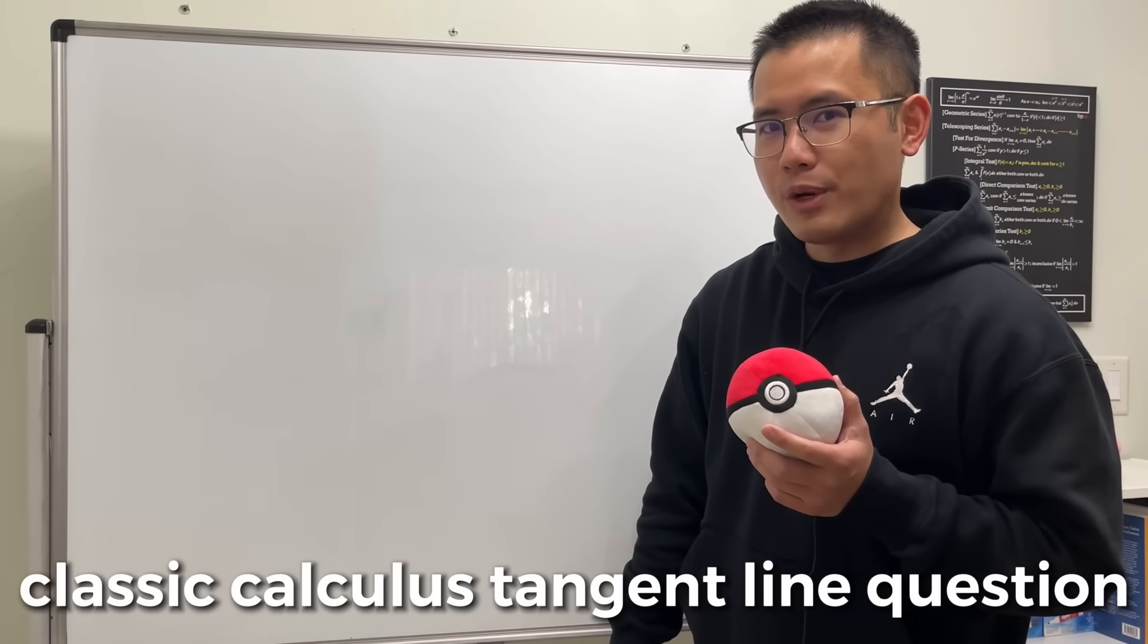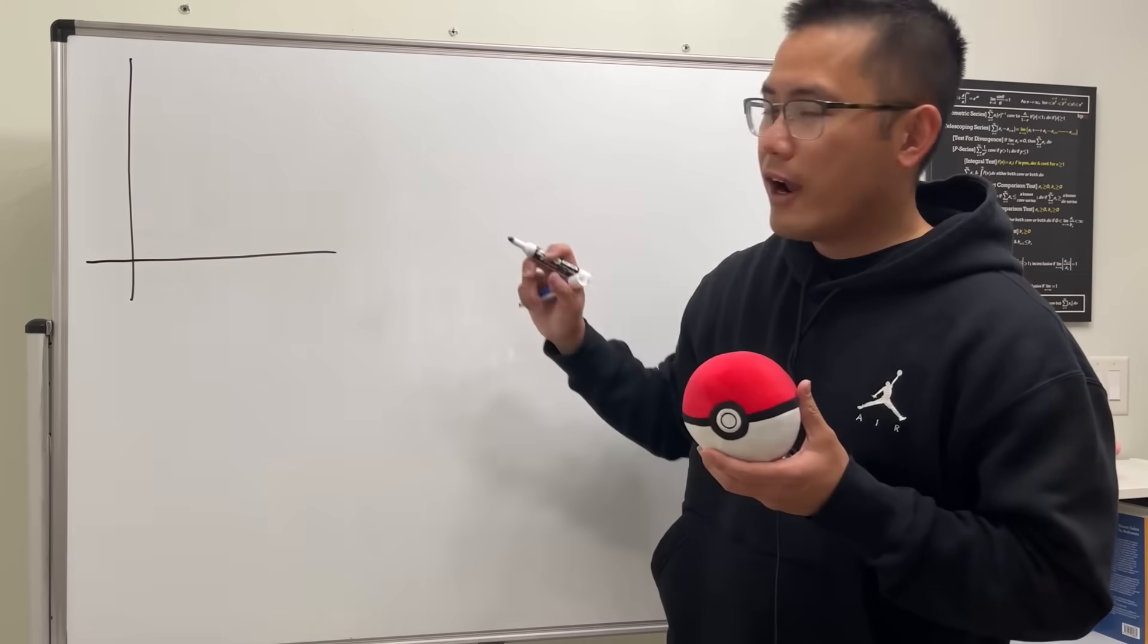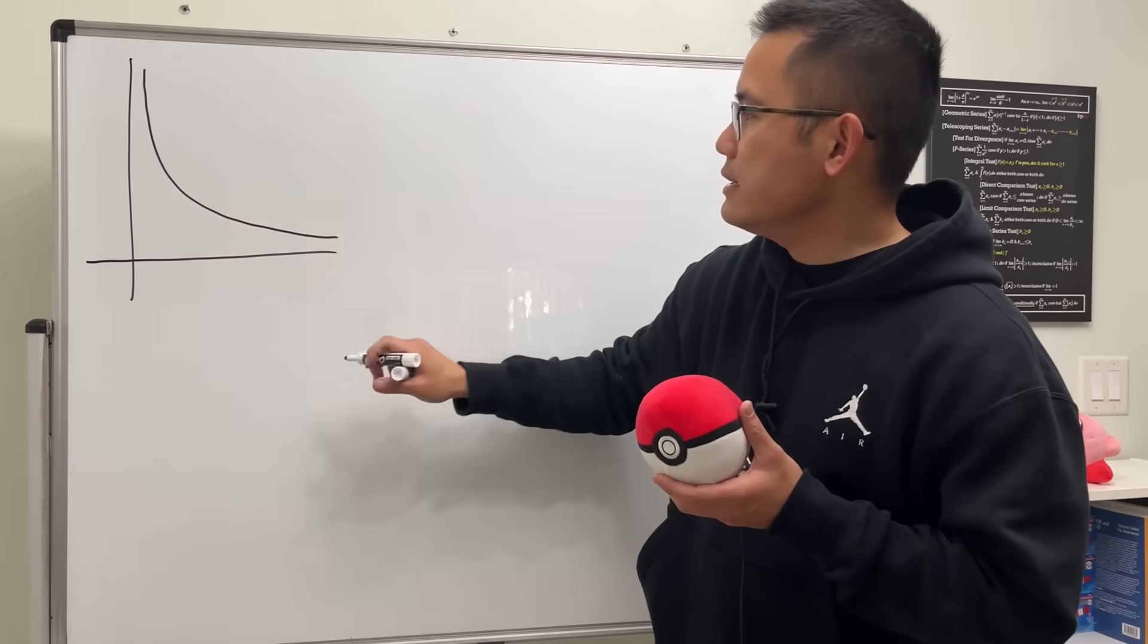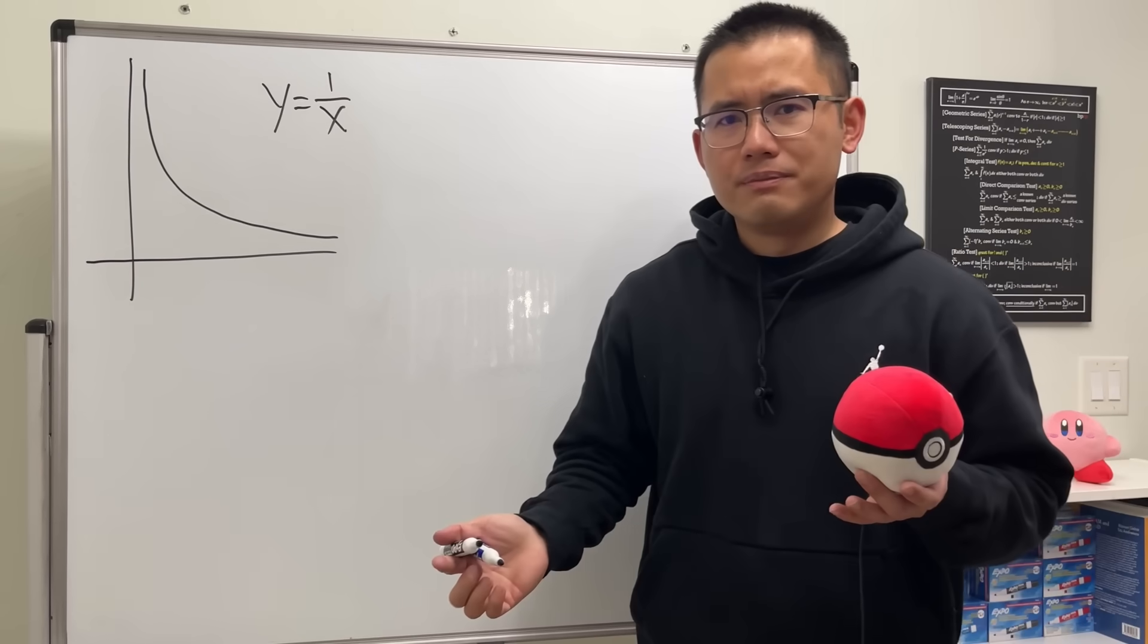This is a very classic calculus tangent line question. Check this out. First off, we are considering the function 1 over x. And let's just look at it in the first quadrant. So we have a picture like this. And we have y equals 1 over x. And of course, we need a tangent line.